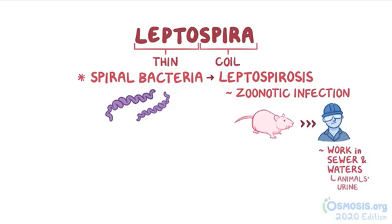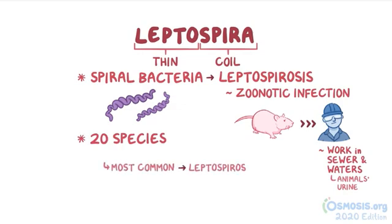The leptospira genus has over 20 species, and the most common species that causes leptospirosis in humans is Leptospira interrogans.